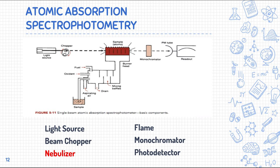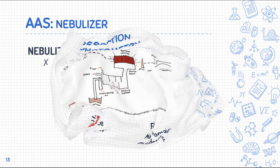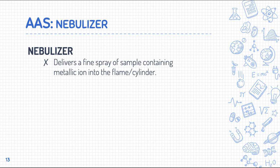After the beam chopper we go to the nebulizer. Going back to the definition of AAS — we are no longer measuring molecules but atoms. The nebulizer's main goal is to deliver a fine spray of the sample containing the metallic ion into the flame or cylinder, which we can call the atomizer.